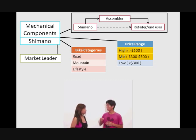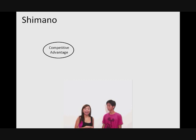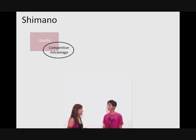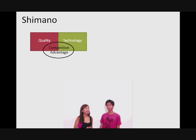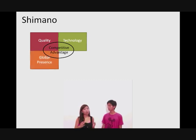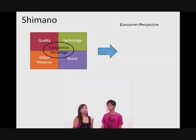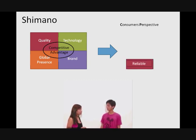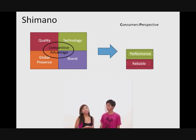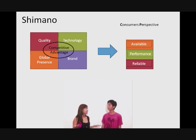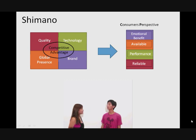So how does Shimano maintain its market leader position? Its competitive advantages lie in the exceptional quality as well as advanced technology. On top of that, it has global presence as well as the brand name that is built over the years. So what does this mean to the consumer? Exceptional quality and advanced technology means that the products are reliable and high performing. Global presence means consumers can get the products easily. Brand name means that there's emotional benefit gained.